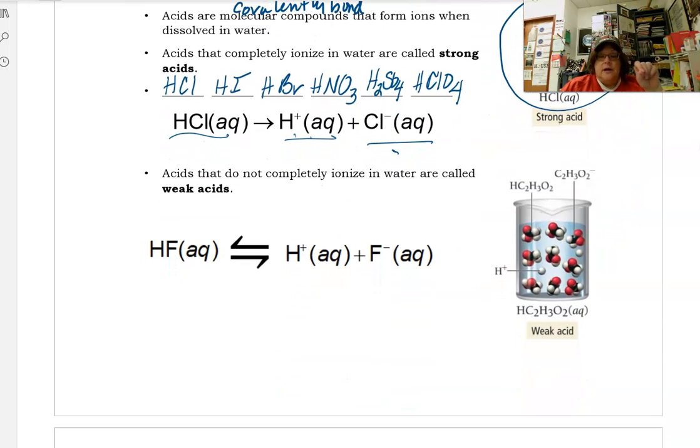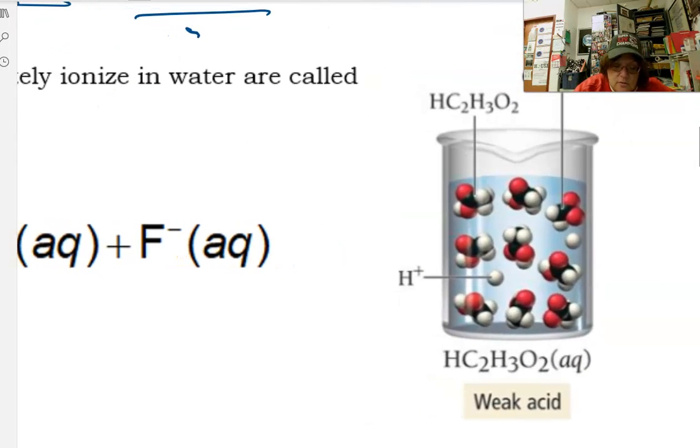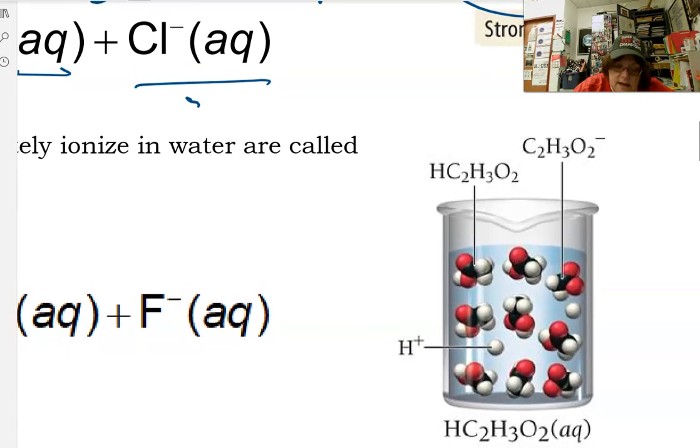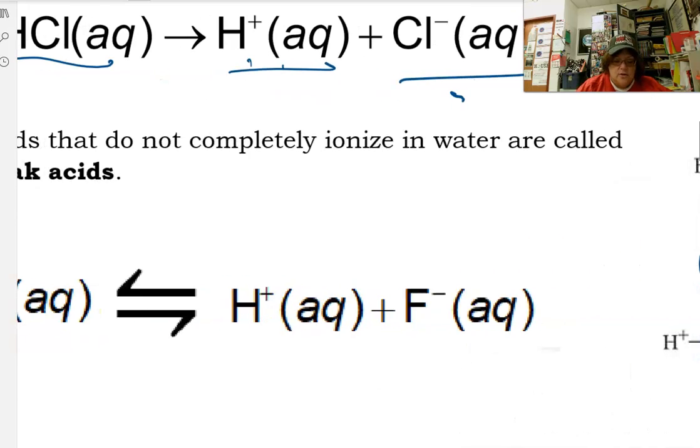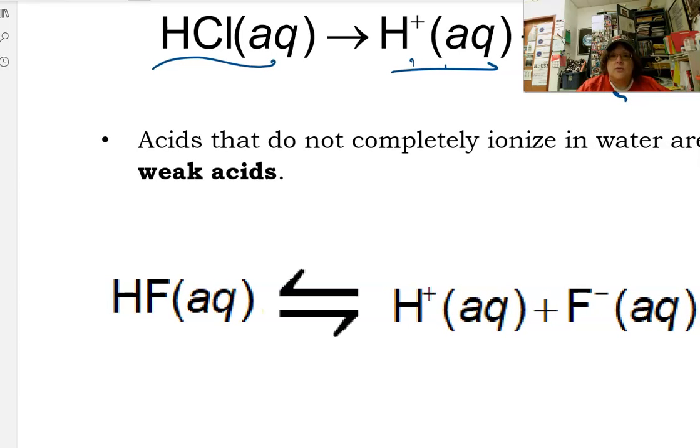Acids that do not completely ionize are weak acids. What you get is you'll notice in the picture, this acetate, which is vinegar, has lost a hydrogen ion. Everybody else still has a hydrogen ion on the oxygen. But he's lost a hydrogen. So in vinegar, you're going to find both hydrogen ions and acetate ions, but you're going to also find HC2H3O2. We represent this using an arrow that goes back and forth.